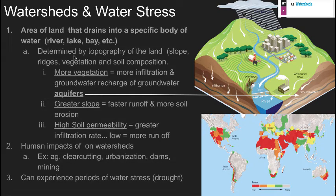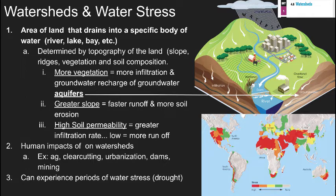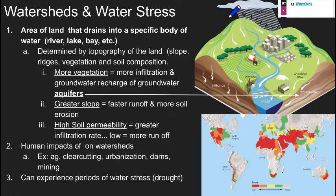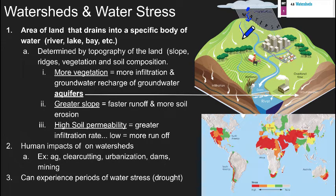Now we'll talk about what a watershed is. A watershed is basically an area of land that drains in a predictable way into a specific body of water — typically a river or a lake — following a downhill slope until it rests in a larger body of water. In this diagram, we're talking about watersheds flowing from rainfall up to a high peak, and you see arrows showing how water moves. A raindrop falling on a peak will follow the slope in a predictable way.